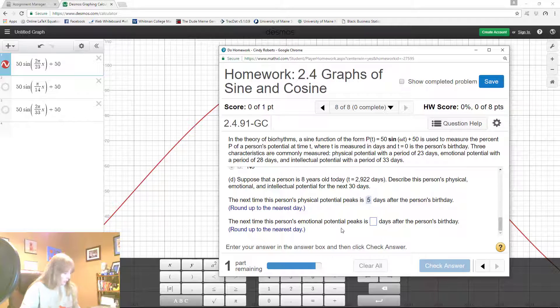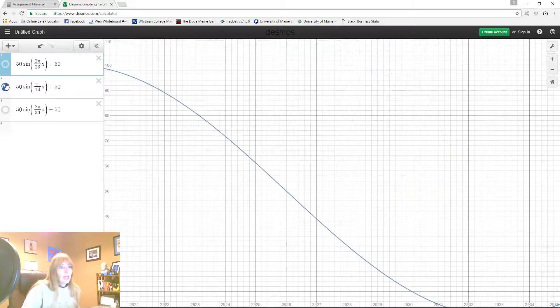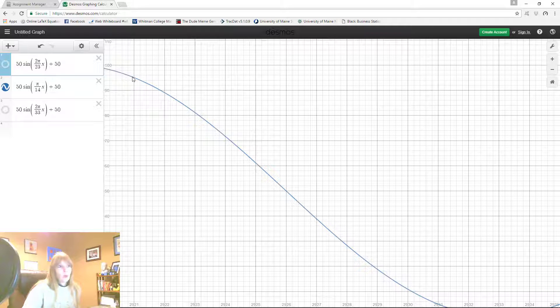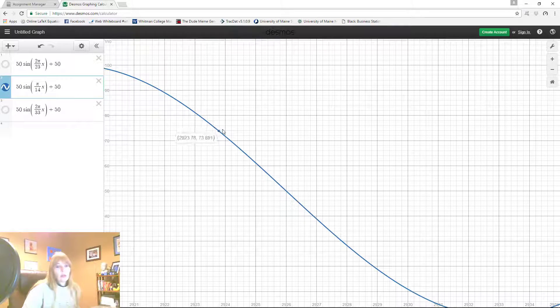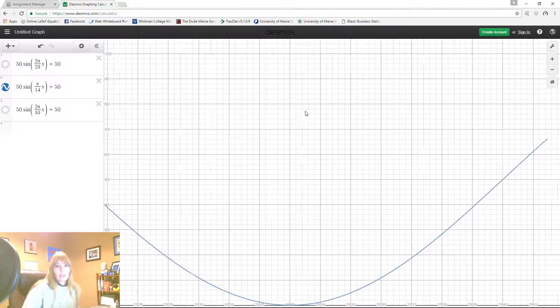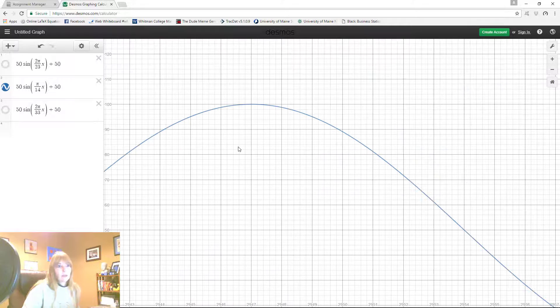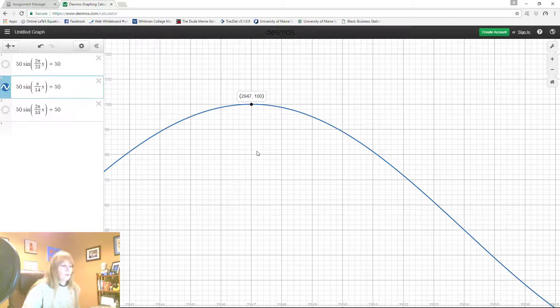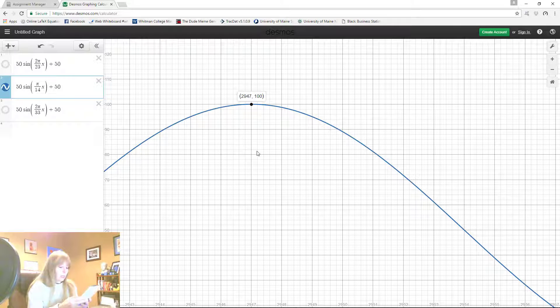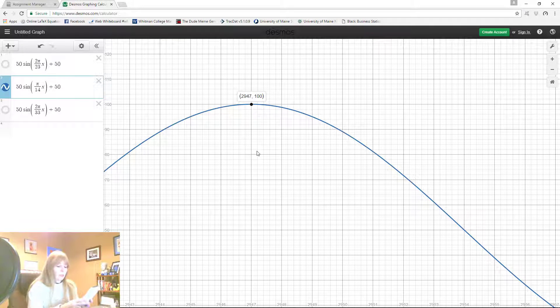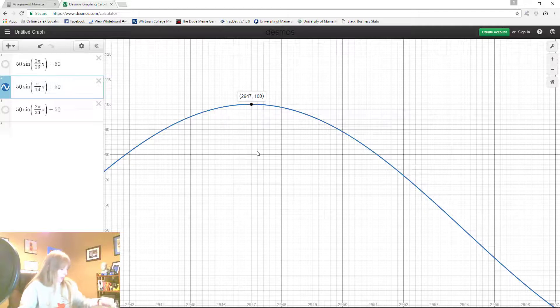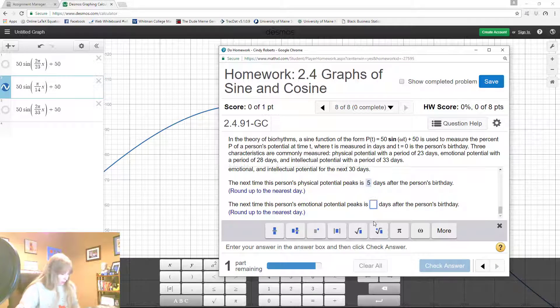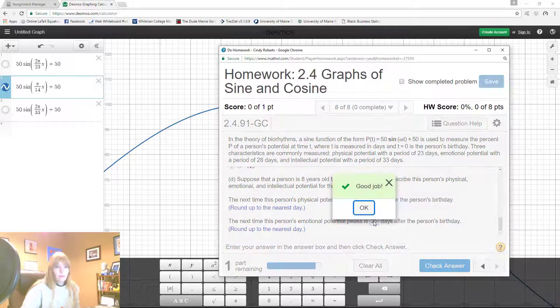And then I just do the same thing for each one. So then I look at the emotional. Emotional, that one's going down. So notice this one, you know, wherever 2922 is over here, I'm gonna actually have to scroll to see how many days later and it's right there. So 2947, that's a whole number, that could be good, right? We'll see if I get it right. So 2947 minus 2922, I get 25. 25, good job.